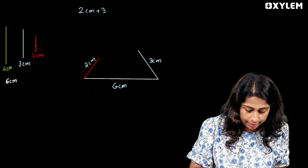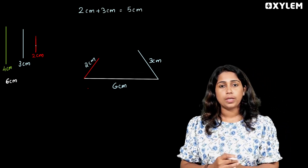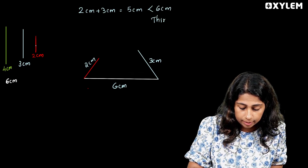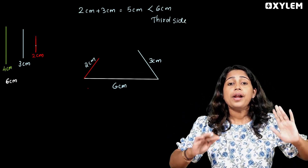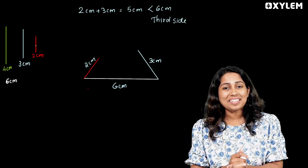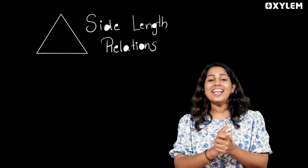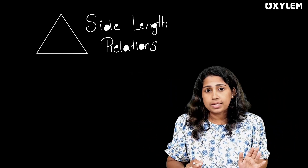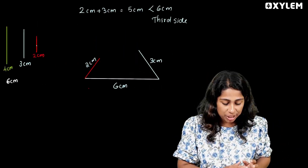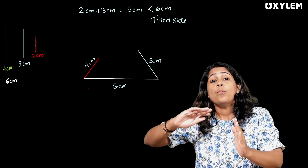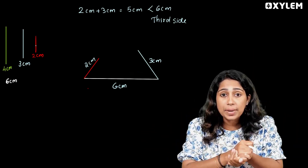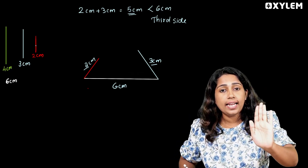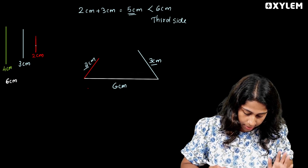2 cm plus 3 cm gives you 5 cm, which is less than 6 cm — less than the third side. This is our topic: side length relation — sides of a triangle. There is a particular condition to satisfy. The condition is: the sum of the two sides must be greater than the third side. This triangle is not possible if the condition is not met.